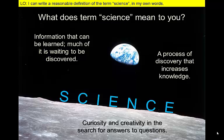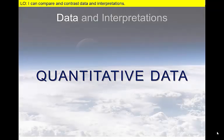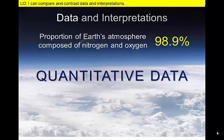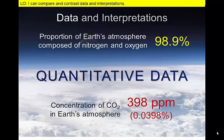The basic building blocks of scientific discoveries are data and interpretations. Here are some examples. We can use quantitative data to measure the characteristics of Earth, such as the composition of our atmosphere. The air that we breathe is composed of mainly oxygen and nitrogen, but has a small concentration of carbon dioxide. Data collected over the last 50 years shows that the concentration of carbon dioxide is steadily rising.